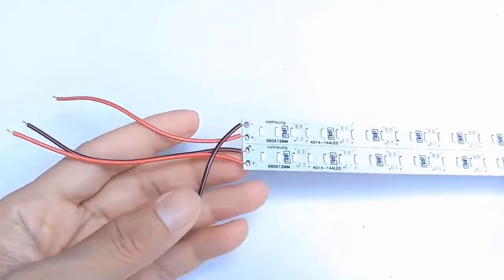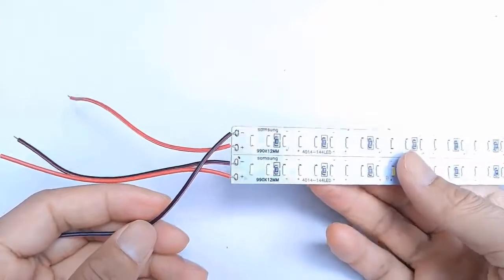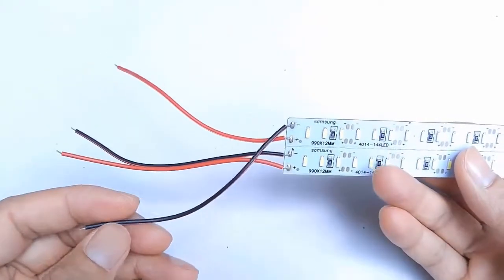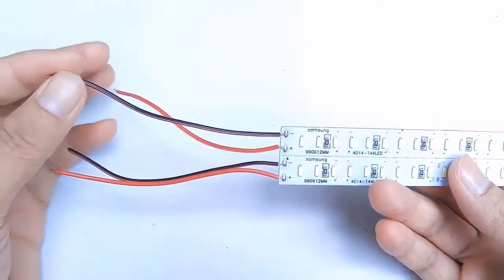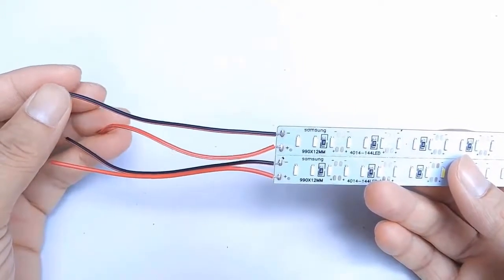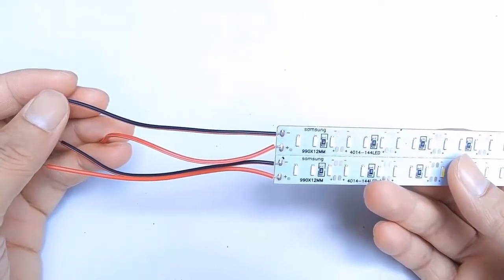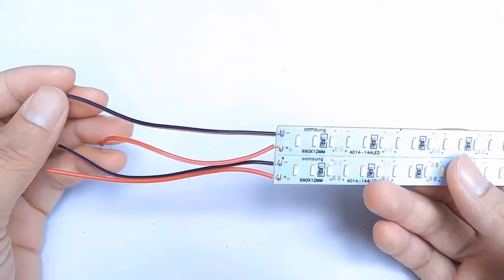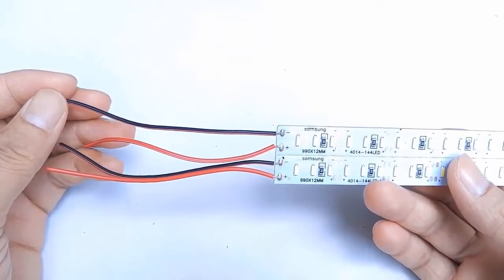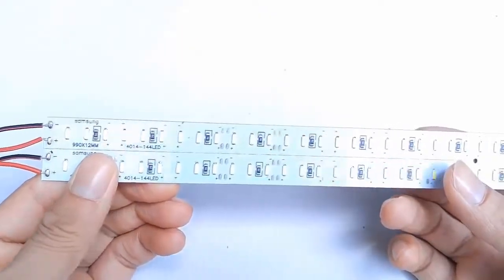Hello everyone and welcome back to my channel. Today I want to show you how to make an LED light with a battery or accumulator. I have two LED lights and they use DC voltage, about 20 volts.